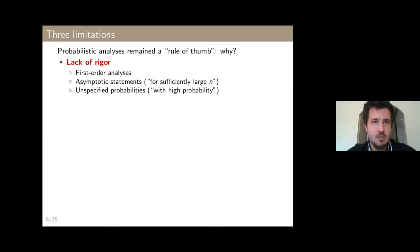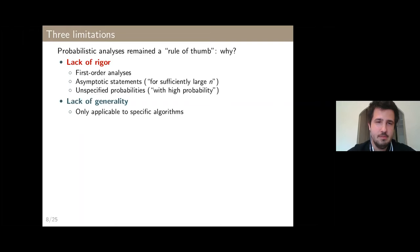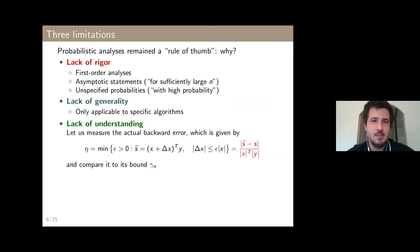The three limitations are: first, probabilistic analyses historically lacked rigorous results — often first-order analyses neglecting second-order terms, with asymptotic assumptions and unspecified probabilities. Second, early analyses were not general — specific to some algorithm or computation, with no analogue of the fundamental lemma of backward error analysis in a probabilistic framework. Third, early probabilistic analyses actually failed to explain many observed phenomena, until recently.